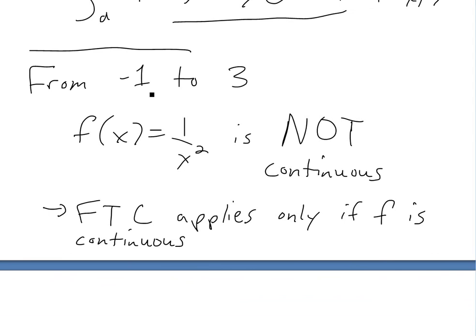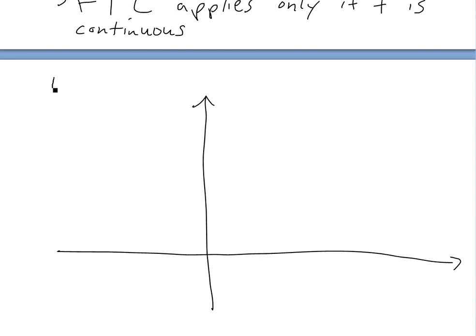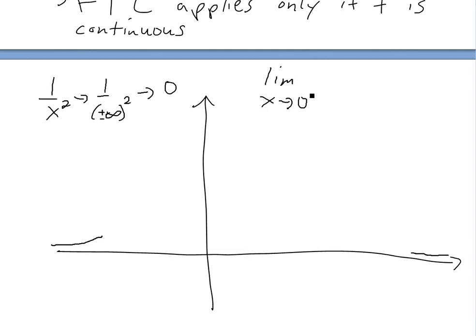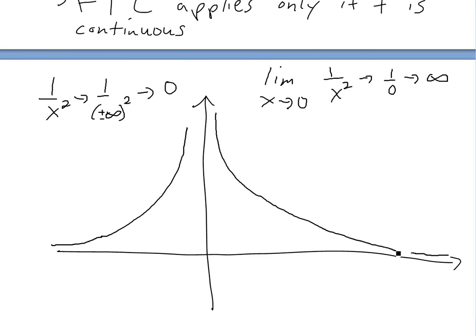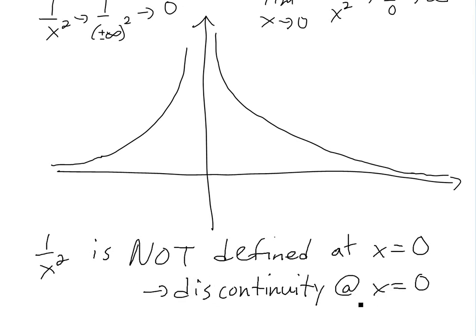If you were to graph this function from negative one to three, it intersects the x equals zero point. For one over x squared, as you go to negative or positive infinity, one over infinity squared goes to zero. And when you take the limit as x approaches zero from either side, one over x squared approaches infinity because you have one divided by zero. So the function is not defined at zero, which means there's a discontinuity at x equals zero.